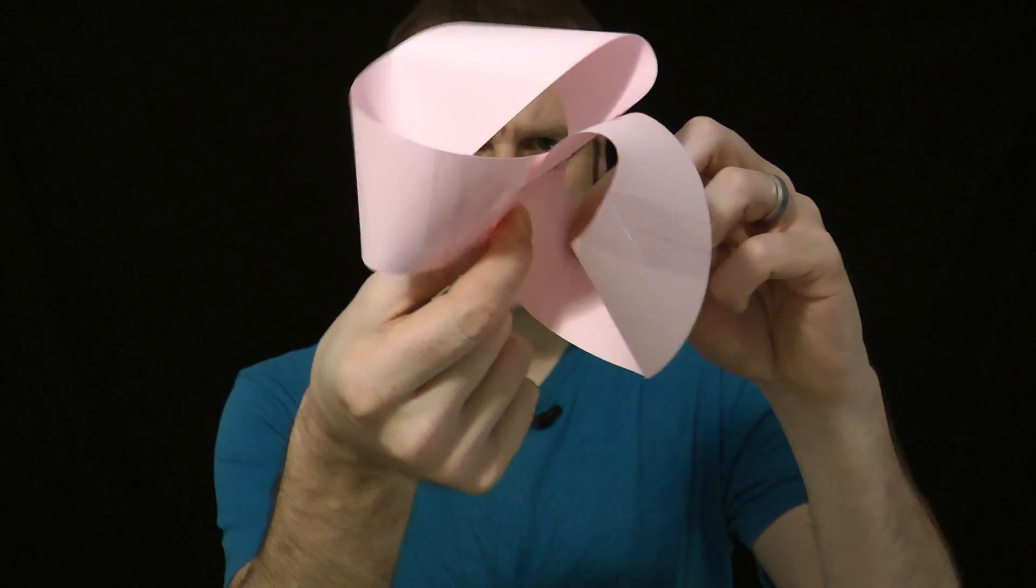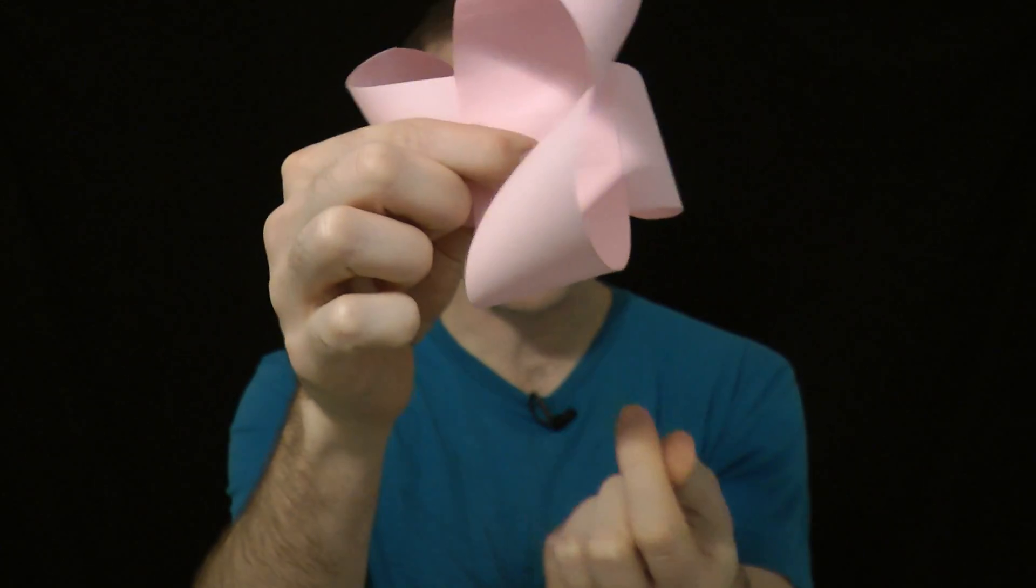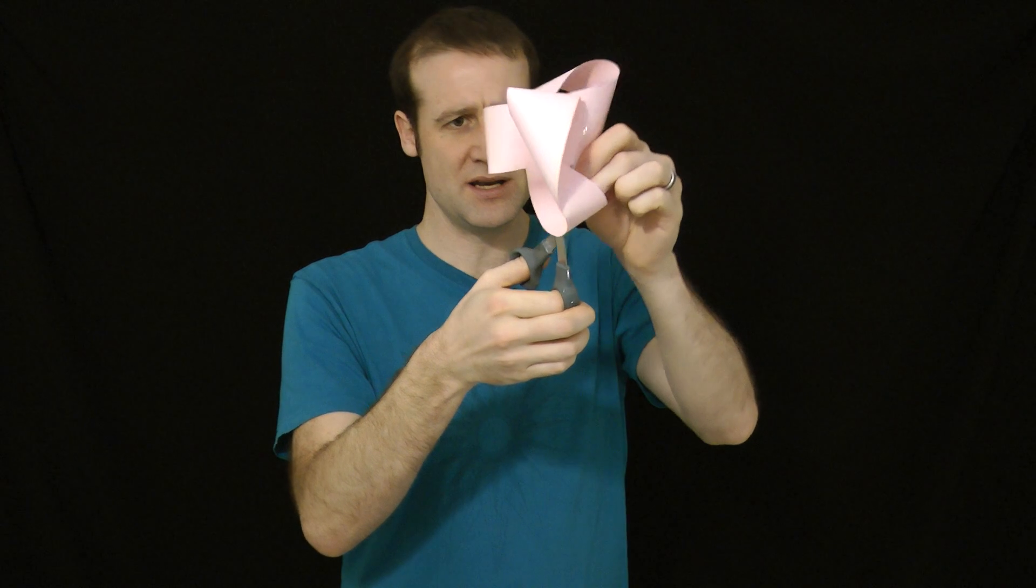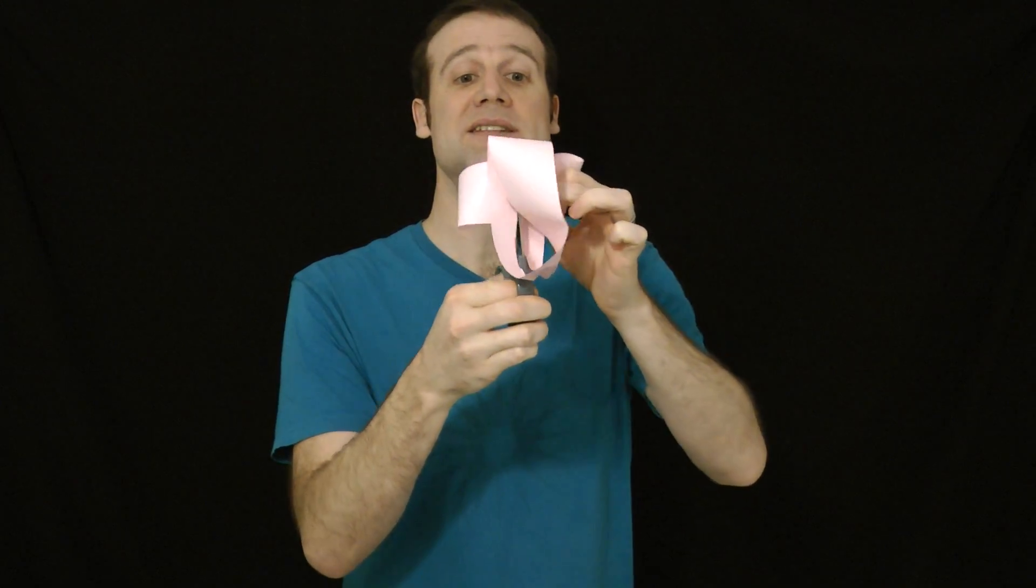On to the main event, two Mobius loops stuck together at right angles. I am now going to cut both of these in half at the same time, so I snip the first one, cut all the way down the center,